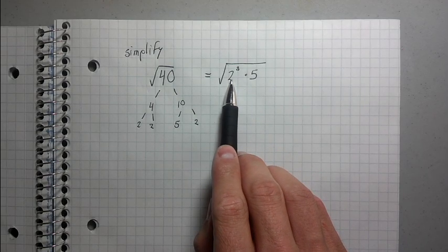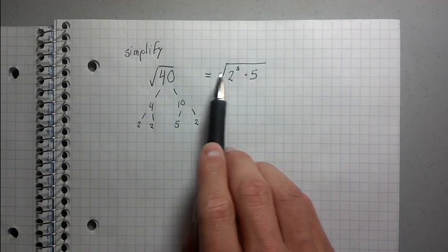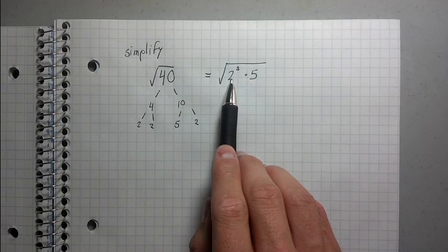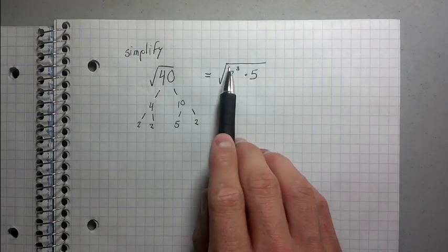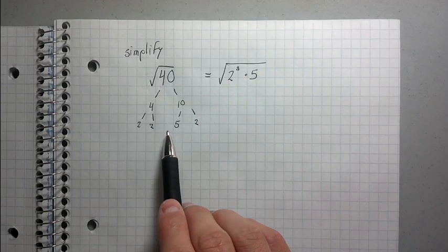So because if I went 2 times 2 times 2 times 5, I would get 40, right? Because isn't 2 times 2 times 2 is 8, and 8 times 5 is 40? Yeah, absolutely. So because it works out, because I did my factorization correctly.